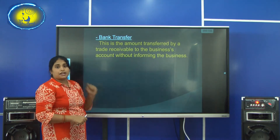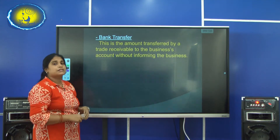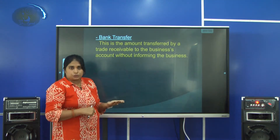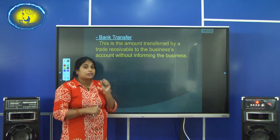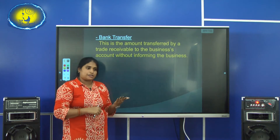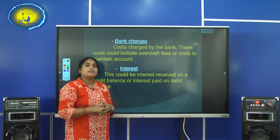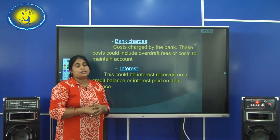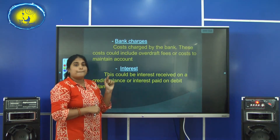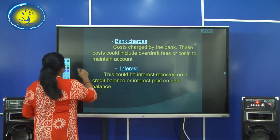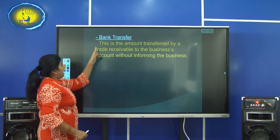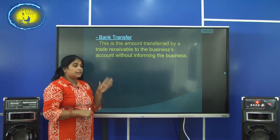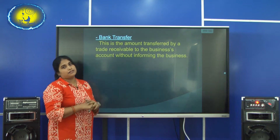The last reason is bank transfer. Bank transfer means an amount of money which a debtor — a person who owes you — has directly deposited to your bank account without informing you. For example, a person called Jacob has to pay 10,000, but without informing the business, if he deposited that 10,000 directly to the business current account, that is a bank transfer. These reasons can be found in the bank statement.